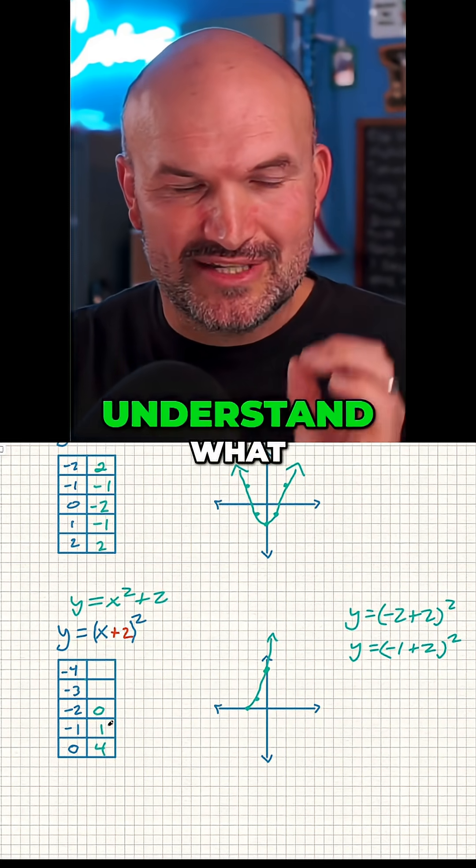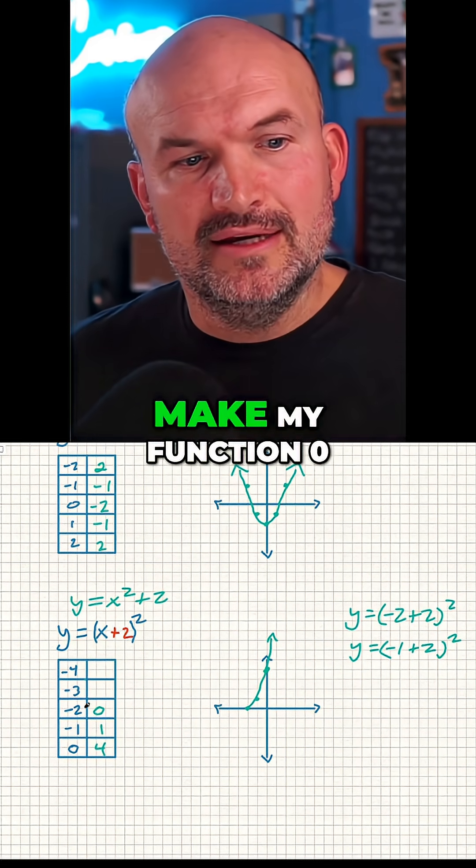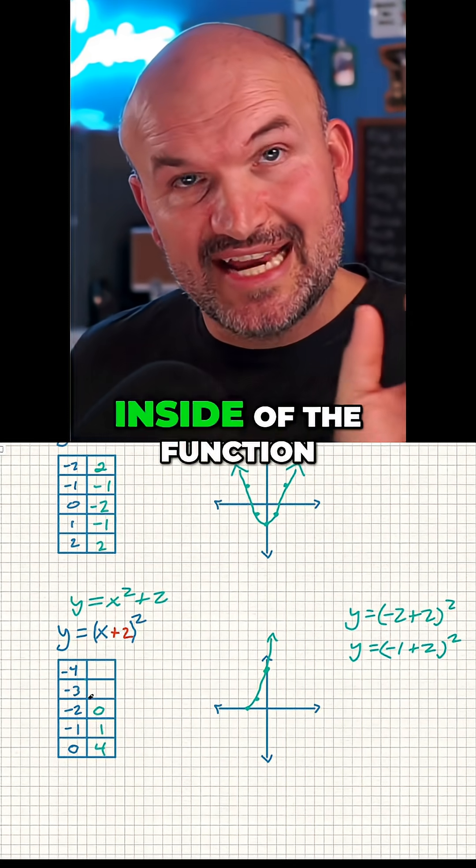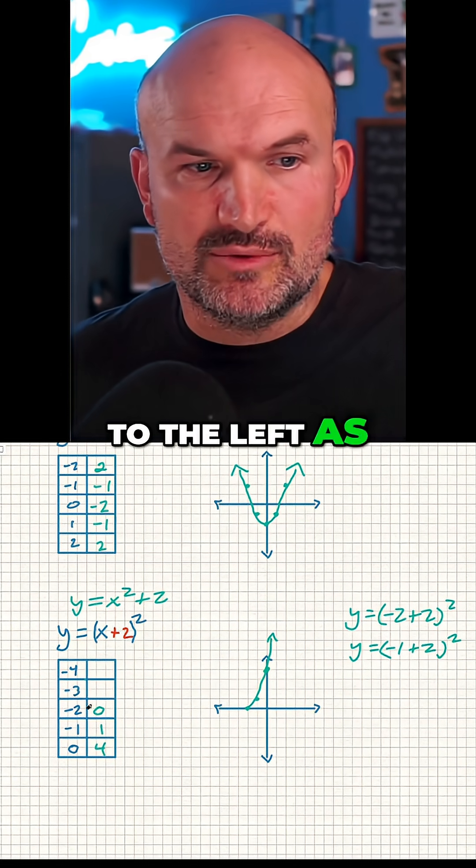So when I'm creating a table, I always want the value that's going to make my function zero inside of the function. I always want that in the middle. I want to pick points to the left as well as to the right of that.